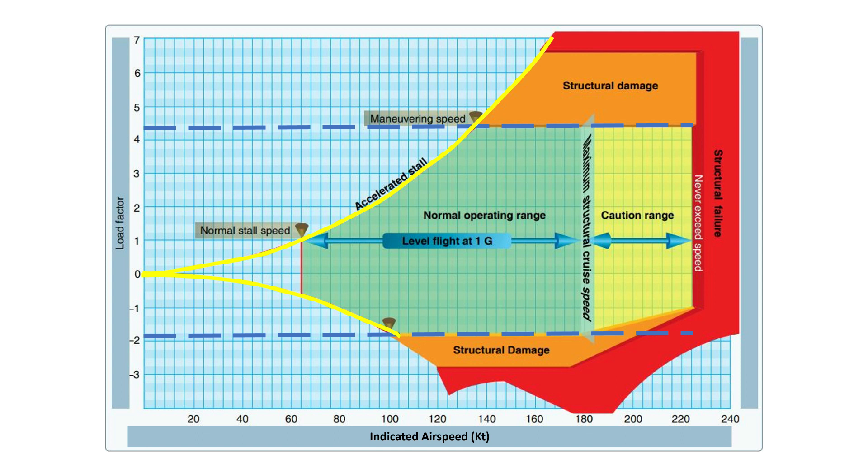From here we can see the 1 G stall speed Vs, which in this example is 64 knots. At 2 G load factor, which is typically reached in a steady 60 degree banked turn, we see that the stall speed increases to just over 90 knots.